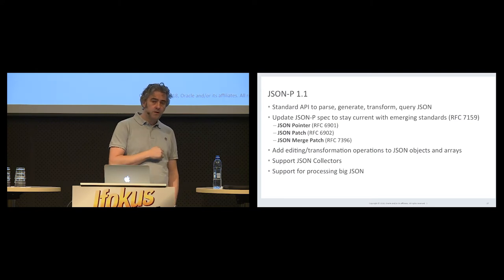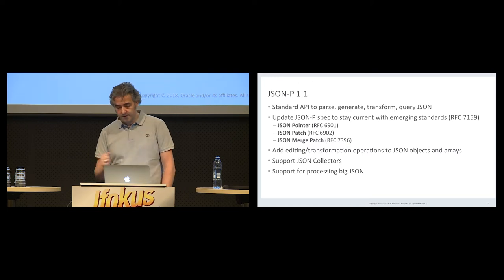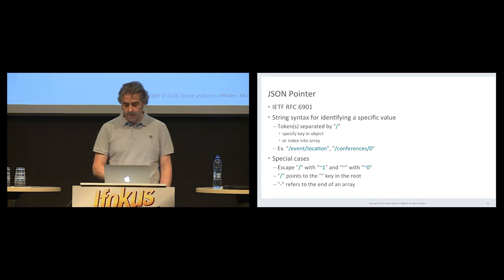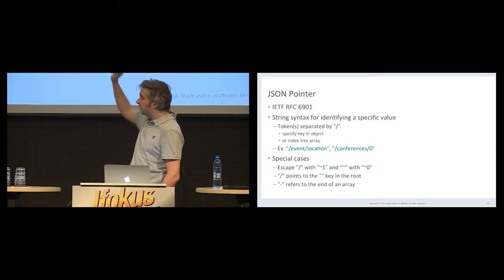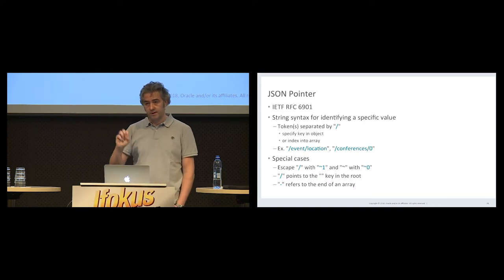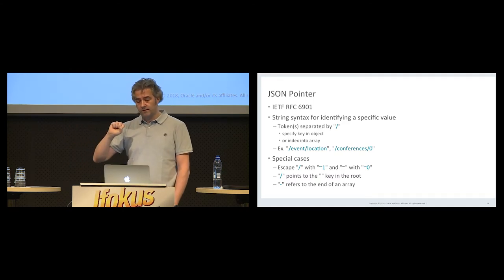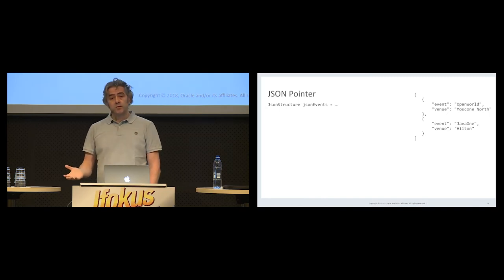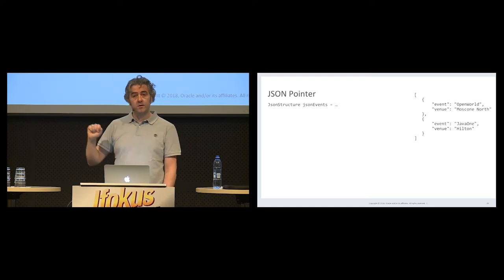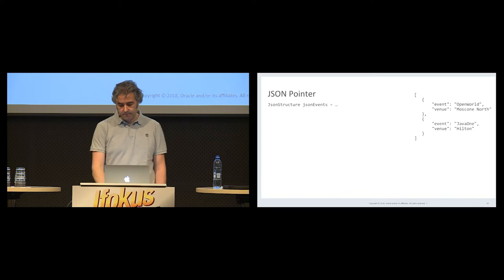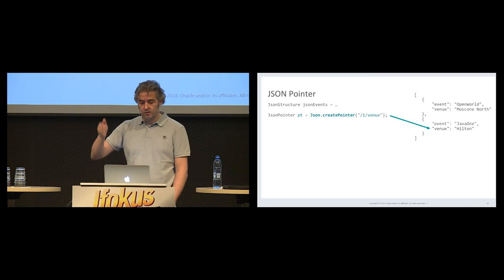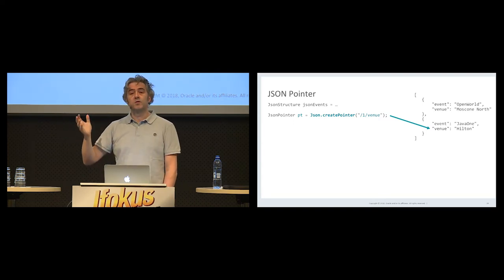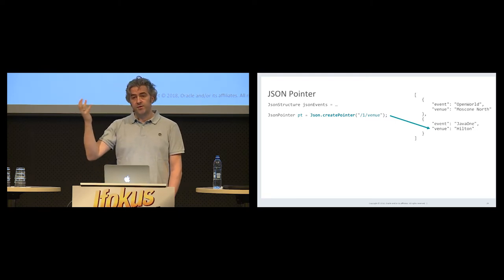The goal of the JSON-P update in EE8 is basically to adopt new standards from the JSON space, like JSON Pointer. A pointer is basically a syntax that can be used to reference a location within a JSON document — for example, /event/location means we want the key value whose key is 'event' and within that object, the key value whose key is 'location'. It's kind of like regex but for JSON. We have a JSONPointer object. To use a pointer, we first create it: /1/venue means we want the object at index one and the 'venue' key value within that object. We just defined the pointer — now we need to do something with it.